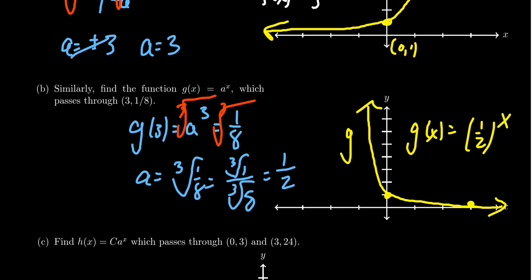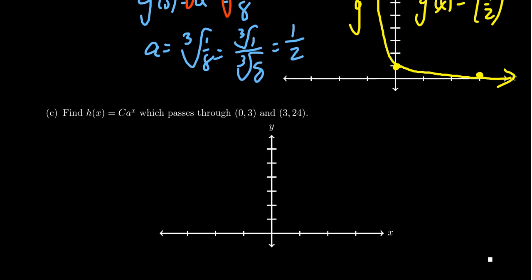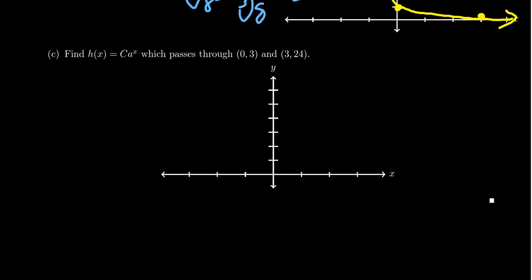So this function would be g of x is equal to 1 half to the x power. So we need a point. We need a point on the graph to determine the base of the function. What if, on the other hand, we do have some transformation in play here? What if we have just a stretch? So h of x looks like c times a to the x. Well, because there's a stretch, there's two parameters we don't know. We don't know c and we don't know a. So we're going to need two points of data to help us out here.